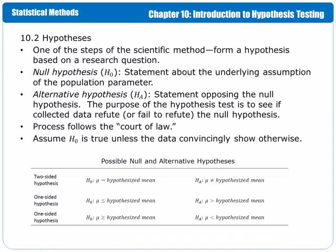One of the steps of the scientific method is to form a hypothesis based on a research question. The null hypothesis, which we represent with H and a subscript 0 (H0), is the statement about the underlying assumption of the population parameter. The alternative hypothesis, denoted H with a subscript of A, also sometimes seen as H with a subscript of 1, is a statement opposing the null hypothesis.